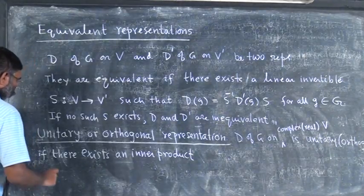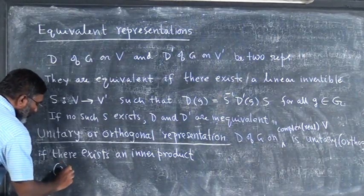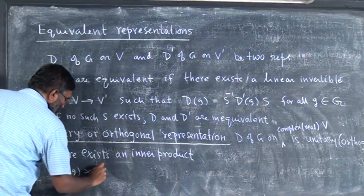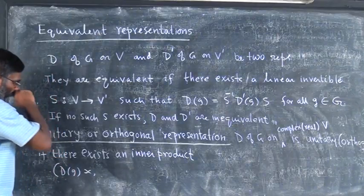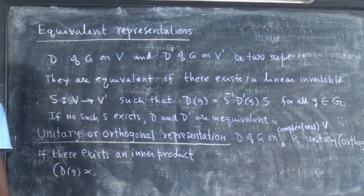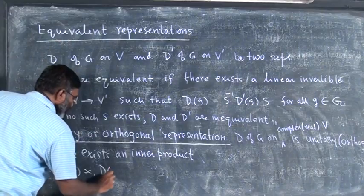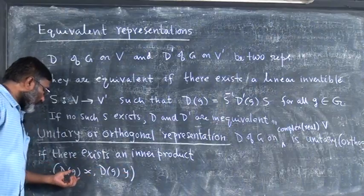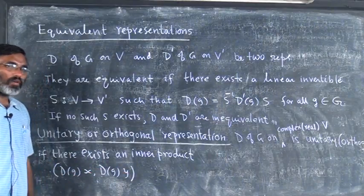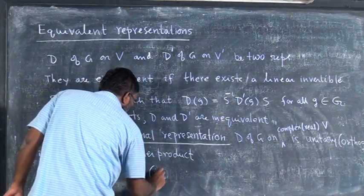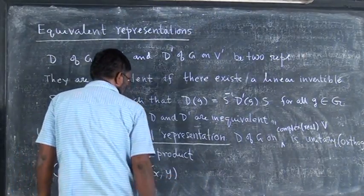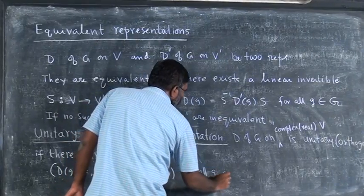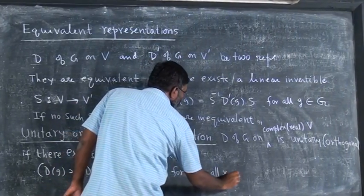This is an inner product such that d of g on x, d of g on y - the inner product d of g on x, d of g on y is equal to (x, y) for all g, all x, all y.